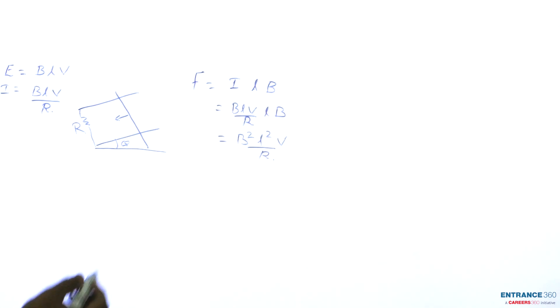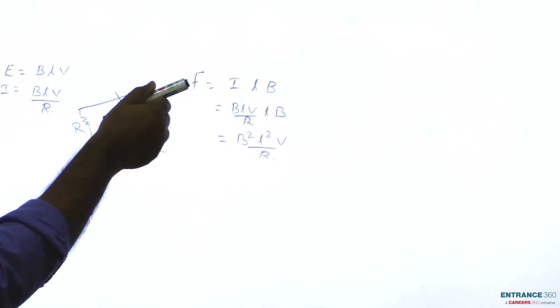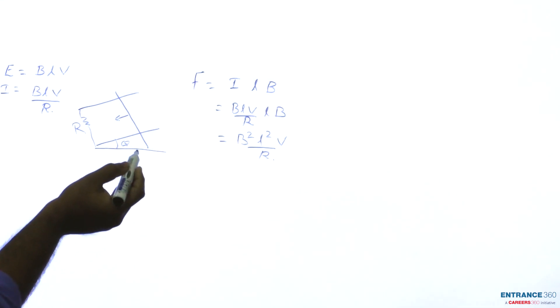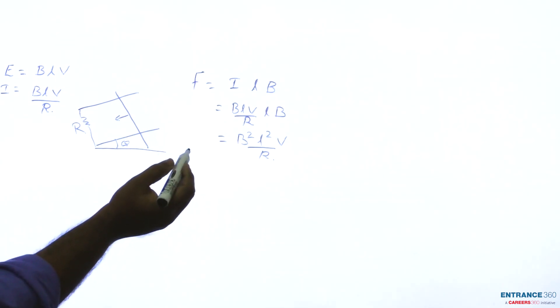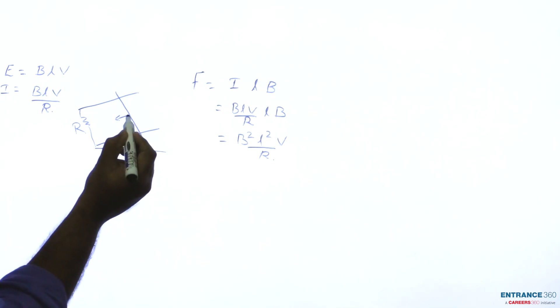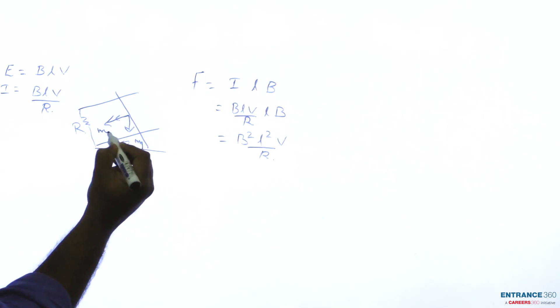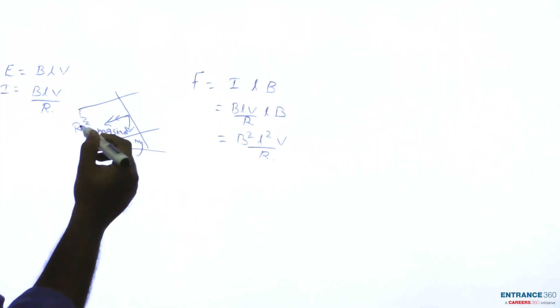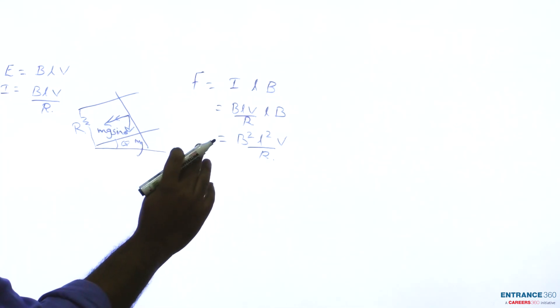This is the force. See, this rail is moving like this. So it is at an angle theta with the horizontal. If Mg is acting downwards, this force will be Mg sin theta. So due to Mg sin theta, this rail is moving.